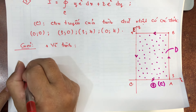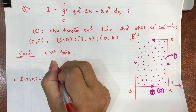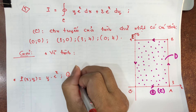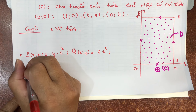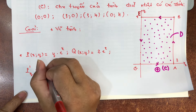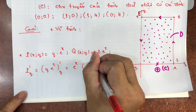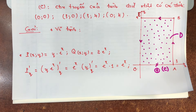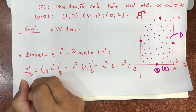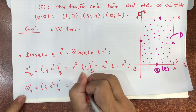Hàm P (đi với dx) là y·eˣ. Hàm Q (đi với dy) là 2eˣ. Tính đạo hàm riêng của P theo biến y: eˣ là hằng số đưa ra ngoài, y lấy đạo hàm theo y bằng 1, kết quả là eˣ. Tính đạo hàm riêng của Q theo x: 2eˣ lấy đạo hàm theo x vẫn bằng 2eˣ.